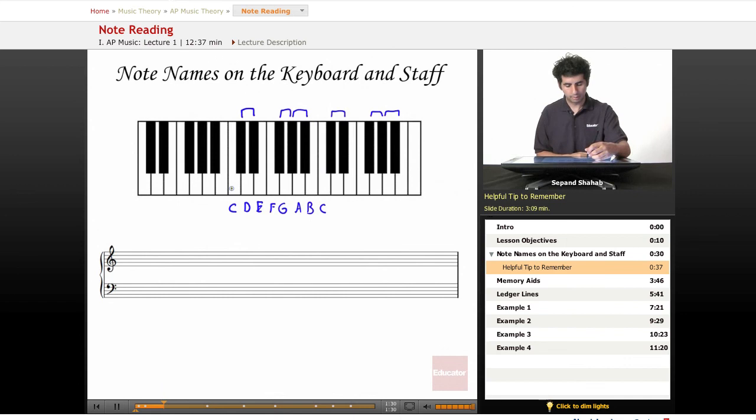The best way to remember the notes on the piano keyboard is to be familiar with these groupings of two and three black notes and to know that C corresponds to this first white note next to the two black notes.